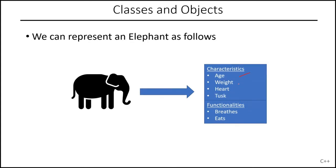Here's an elephant. Has an age, has a weight, has a heart, has a tusk. I know this one doesn't, but let's suppose that it has a tusk. So it has a tusk. It's able to breathe, and it can eat.